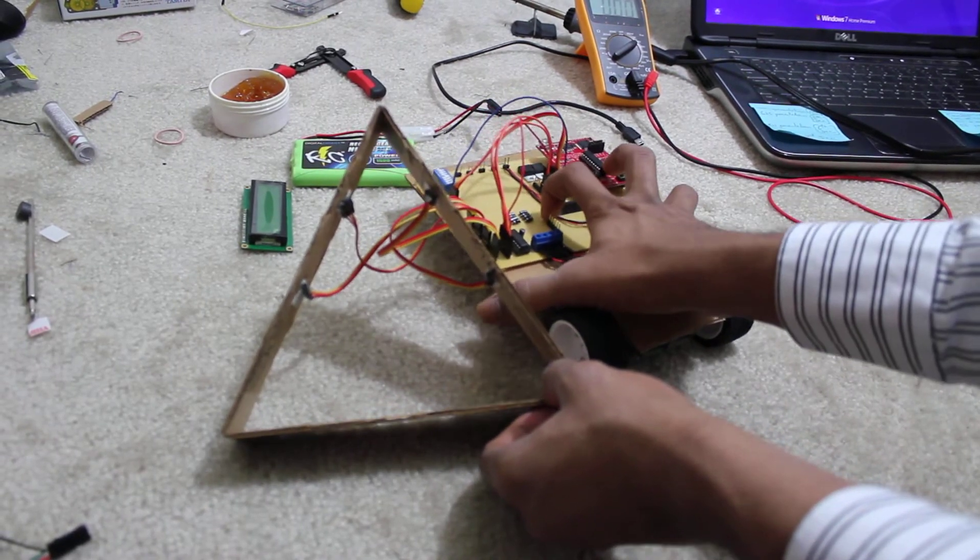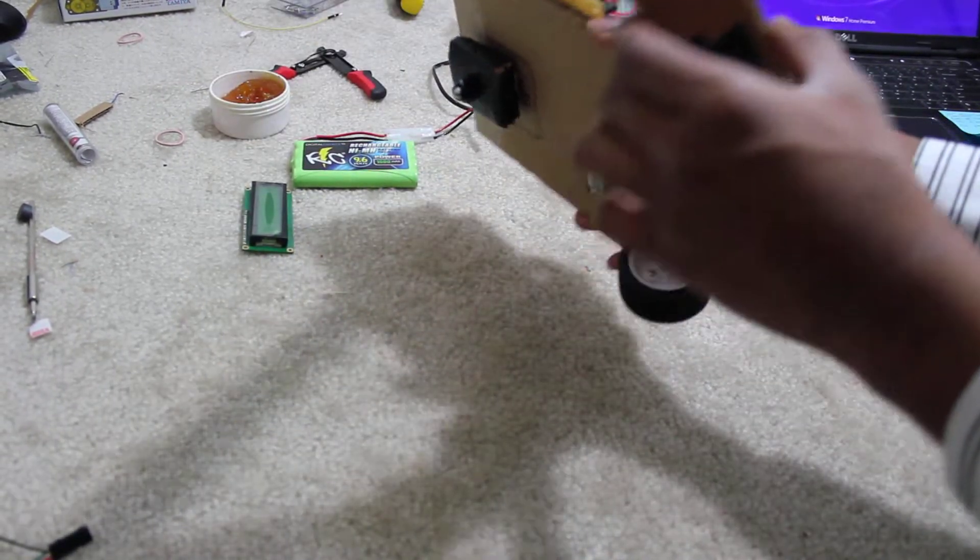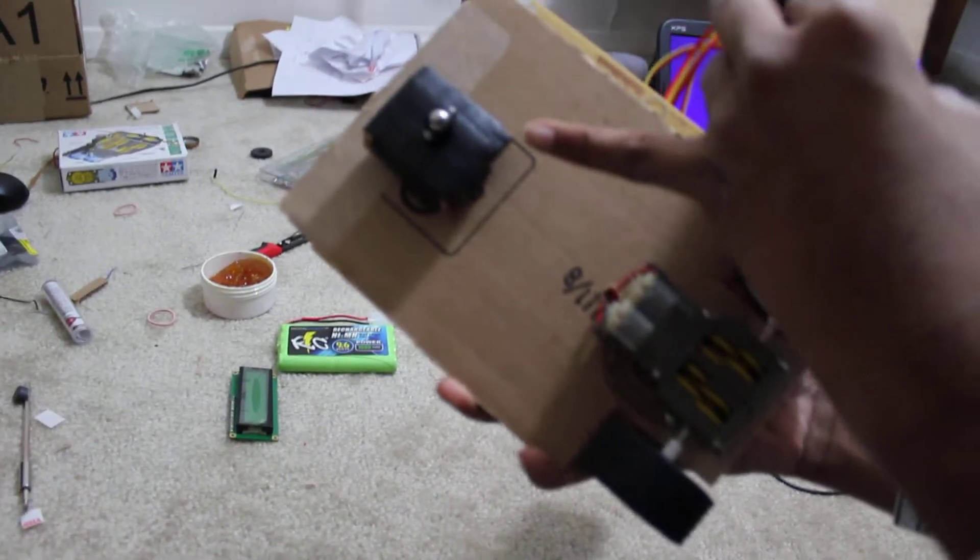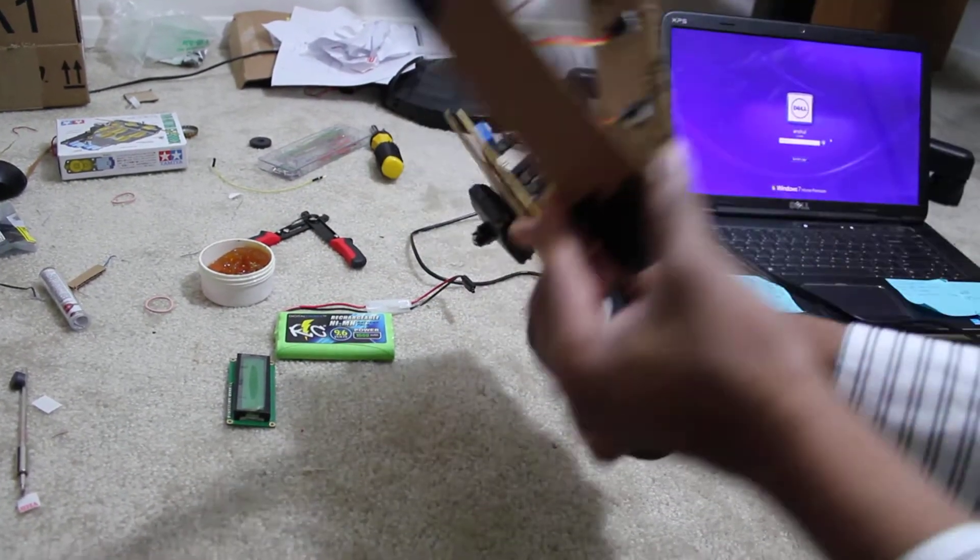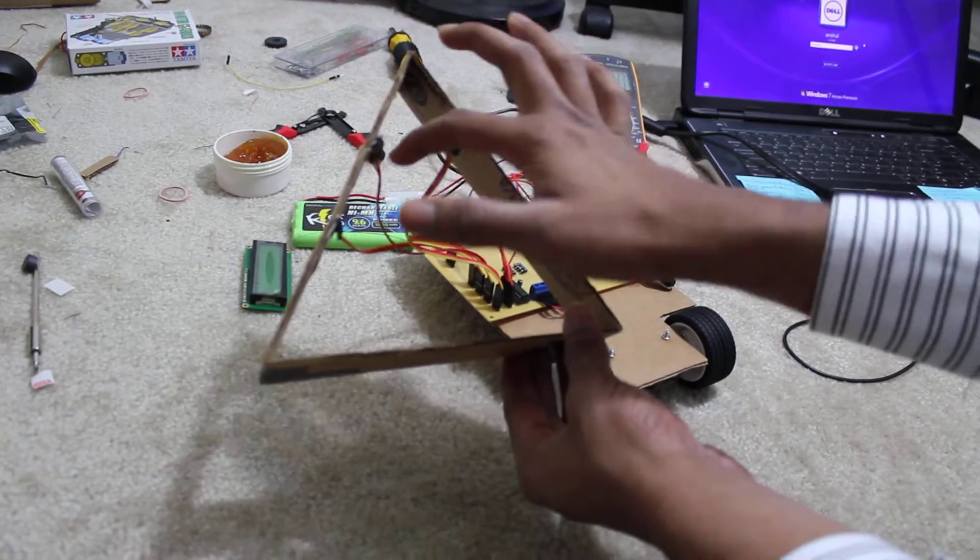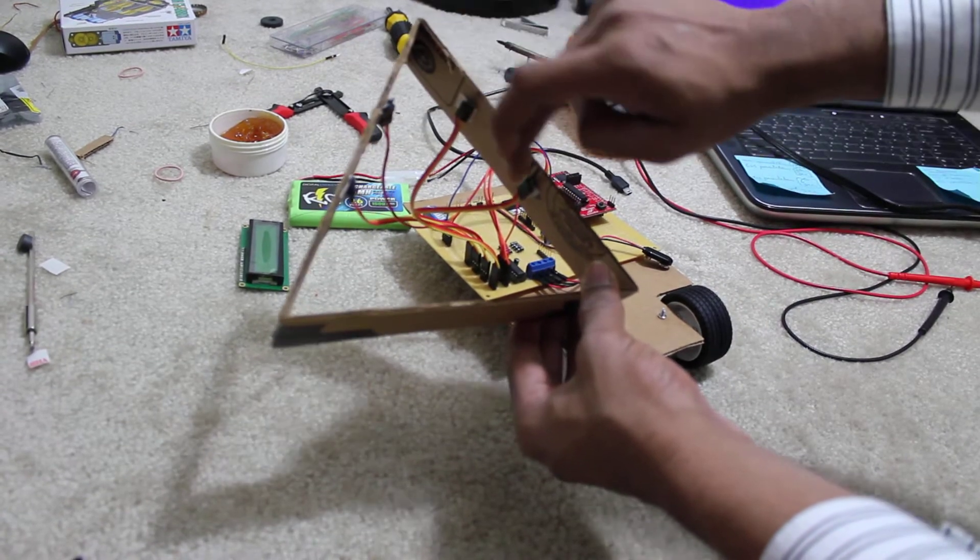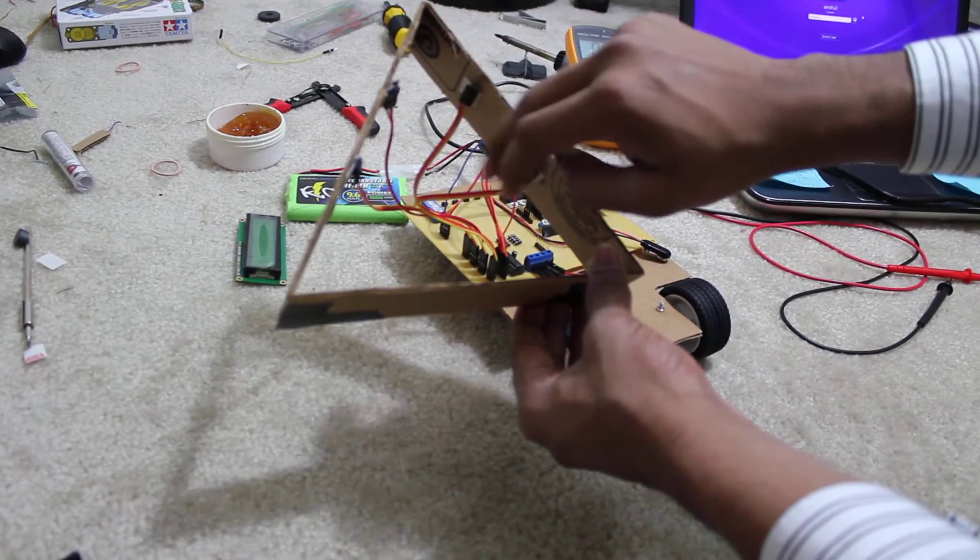So this is actually our whole setup. We are using a gearbox for driving the wheels and one castor wheel here for support, and these are the four sensors that we have placed to sense the magnetic field. Actually this is a frame to be placed outside our mouth.